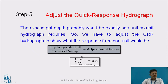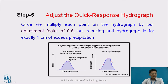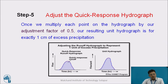Suppose the hydrograph unit is 1 centimeter and the excess precipitation is 2 centimeters, so the adjustment factor will be 0.5. We multiply each point on the hydrograph by this adjustment factor of 0.5. Our resulting unit hydrograph is then for exactly 1 centimeter of excess precipitation. Previously we had a response for 2 centimeters; by multiplying by 0.5, we get the response for 1 centimeter of rainfall excess. That is the simple principle adopted here.